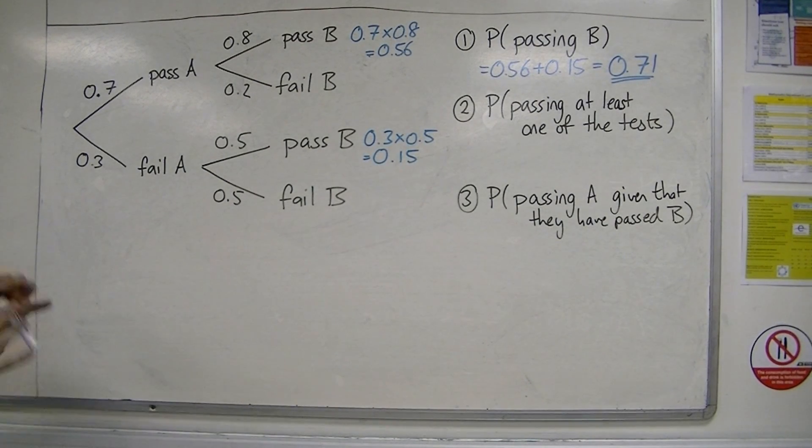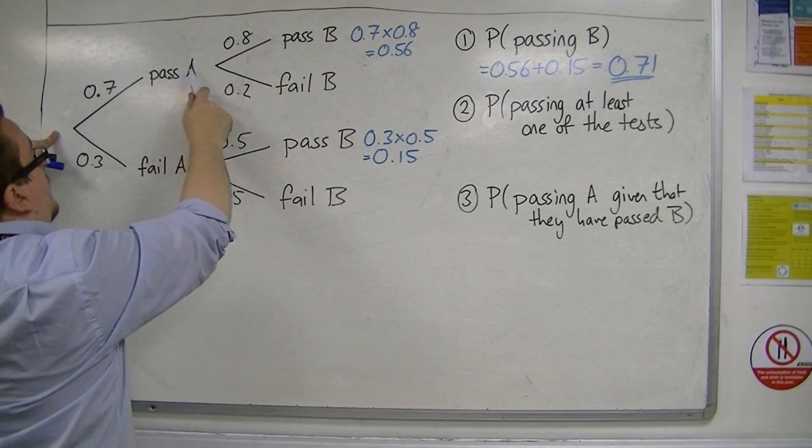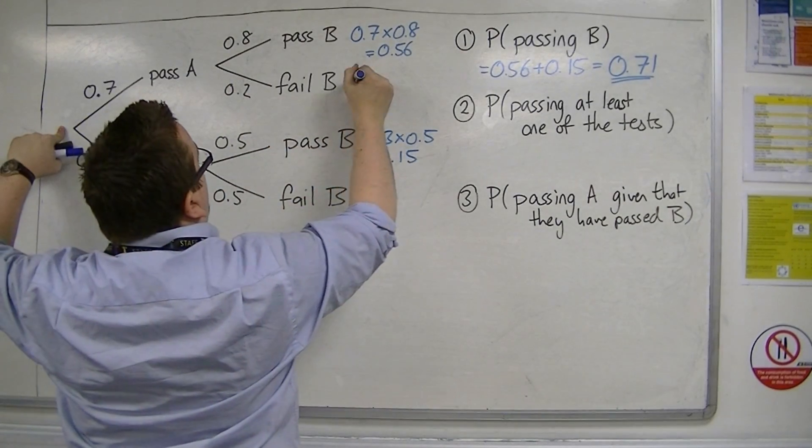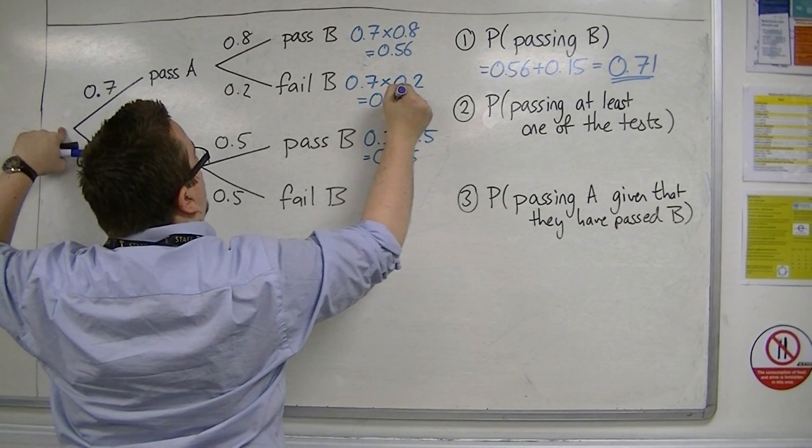Let's now find the probability of passing at least one of the tests. If they pass at least one, he could pass both of them, or just pass A and fail B. In that case, the probability is 0.7 times 0.2, which is 0.14.